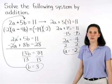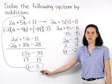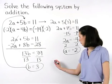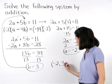So a equals negative 2, and b equals 3. We write our answer in the form of the ordered pair, negative 2, 3.